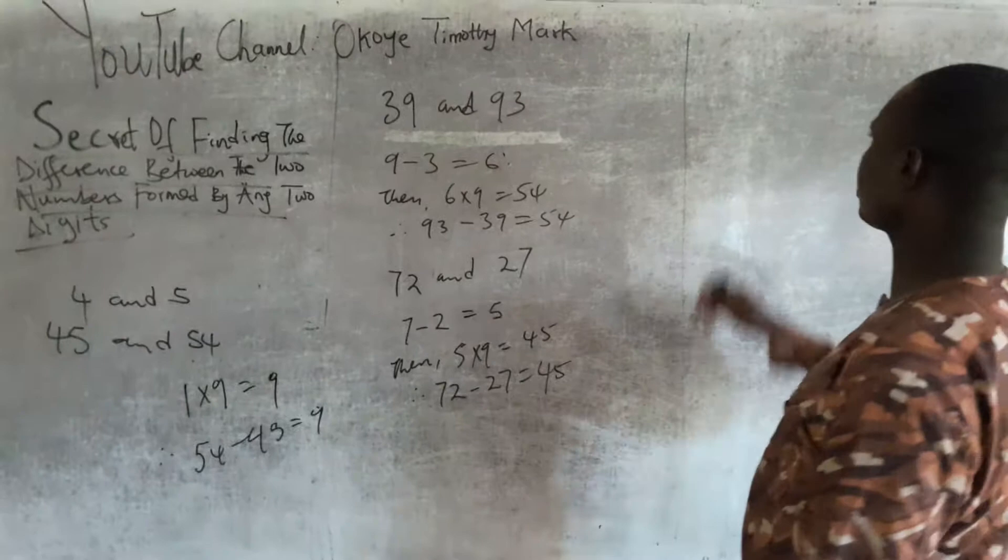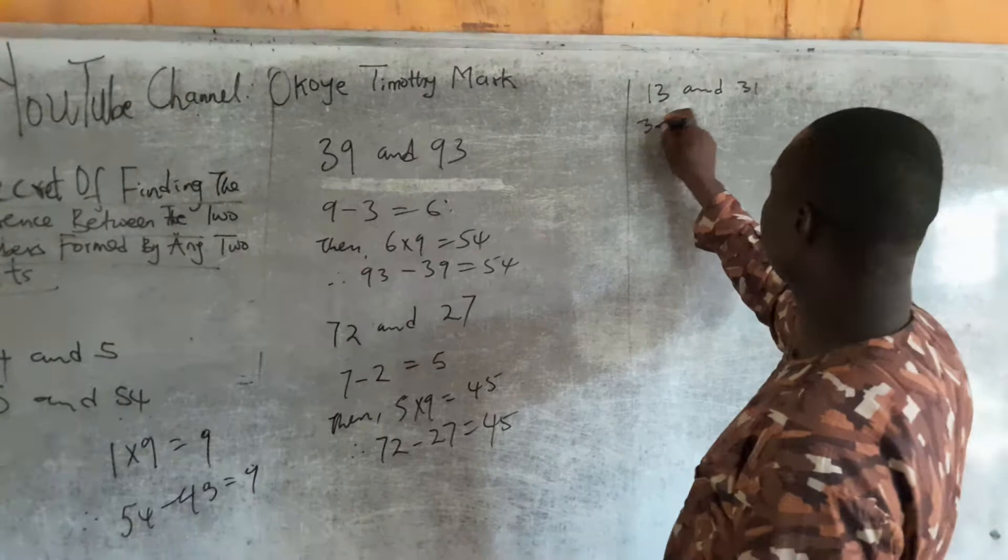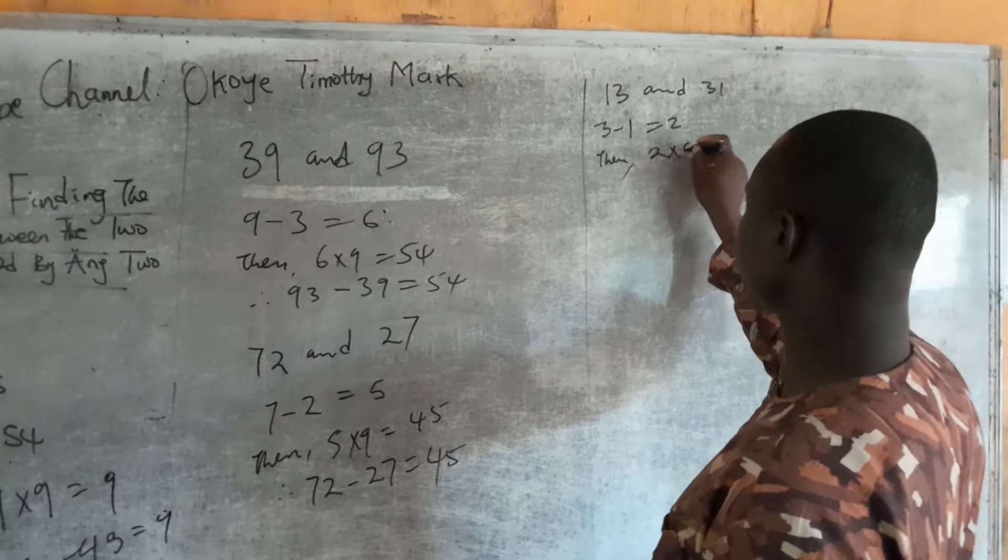Let me take another set of numbers, something like 13 and 31. Of course, 3 minus 1 is 2, then 2 times 9 is 18.